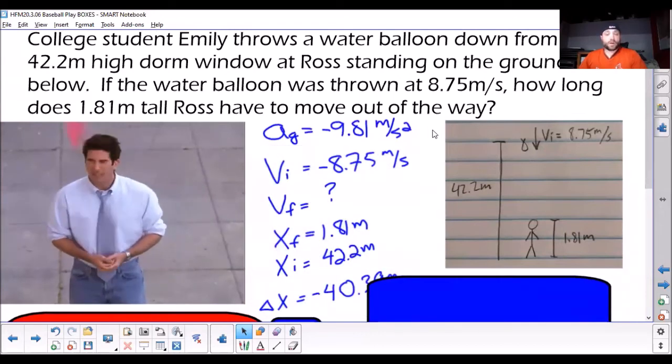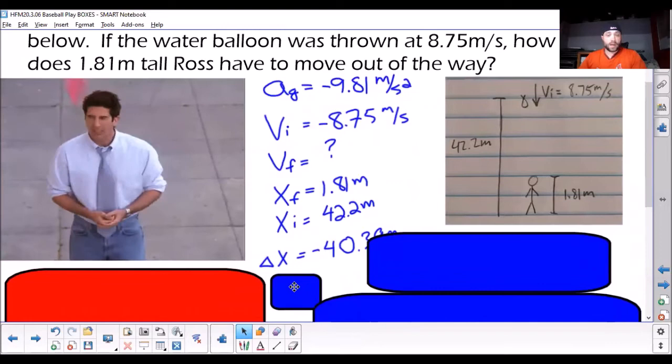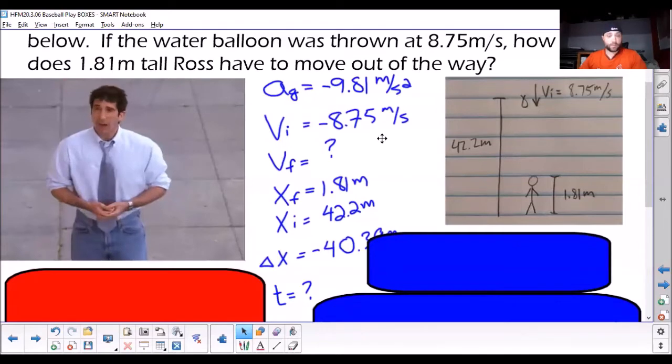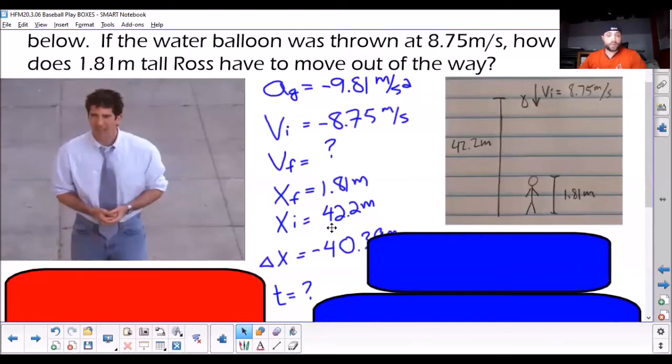Then we write down all of our knowns and our unknowns. So, big question is, how much time? Things we know: We know the acceleration due to gravity. We know the initial velocity, and it's negative because it's being thrown down. We know the initial height is 42.2 meters, and we know the final height is 1.81 meters. So, that means if we subtract these two, we can find out our delta x.